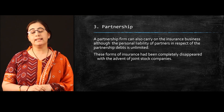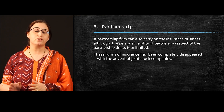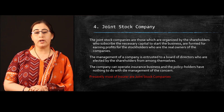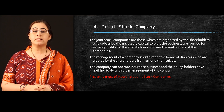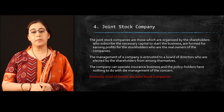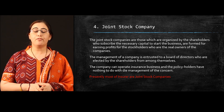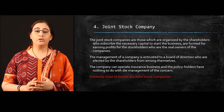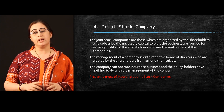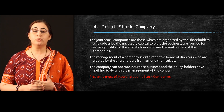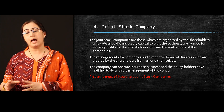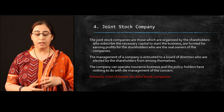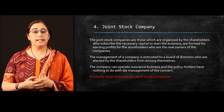Practically there are very few partnership organizations in India in the business of insurance. Now the fourth type is the joint stock company. Joint stock companies are those which are organized by the shareholder pattern who subscribe the necessary capital to start the business and are formed for earning profit from the stockholders who are the real owners of the company. Now before we move further, let us clarify the difference between a policyholder and a shareholder.